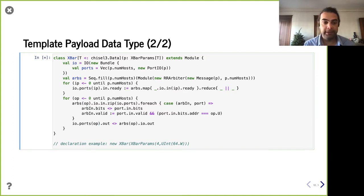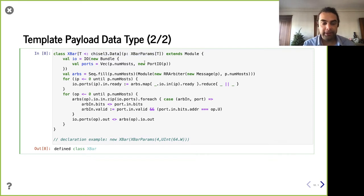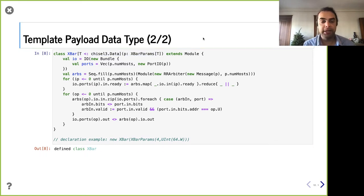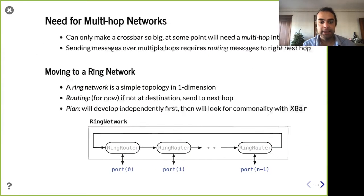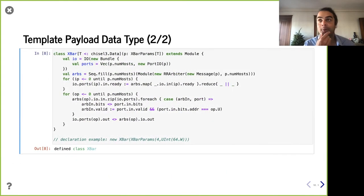We've already made a pretty cool generator — a crossbar parameterized by data type and number of ports, using arbiters internally to make it work. Maybe there are additional ways to make it faster, but this is something we've written in not a lot of time, making tons of reuse of various abstractions and language features. Here we are using templating as well as tidying things up with case classes. This is definitely a parameterized generator.